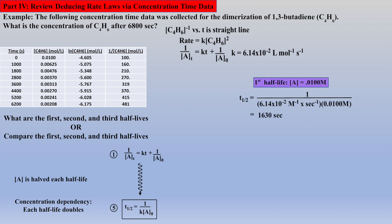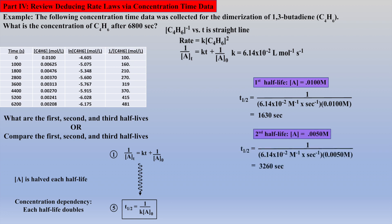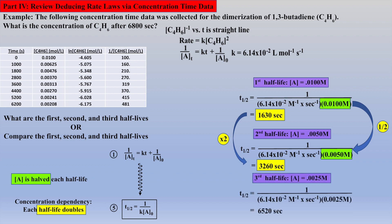Substituting the rate constant and the initial concentration affords the first half-life. Calculating the second half-life means we have to use half the initial concentration, which affords a half-life that is twice the first. Calculating the third half-life means the concentration is again cut in half, causing the third half-life to be twice the second half-life.